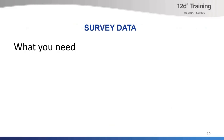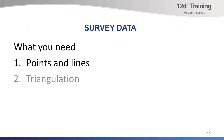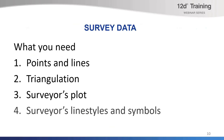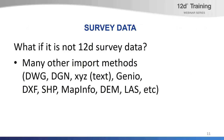So what survey data do you need? The best scenario is to get all of the following items: points and lines forming the existing surface and other non-surface information like underground services. The triangulation is important to receive — this way the surveyor is providing the existing surface and the designer is not generating it based on assumptions. The surveyor's plots provide confirmation of what has been provided and may have extra information. The surveyor's custom colours, line styles and symbols as 12D files will help the designer view the data just as the surveyor has. If 12D data is not available there are many alternative input methods.